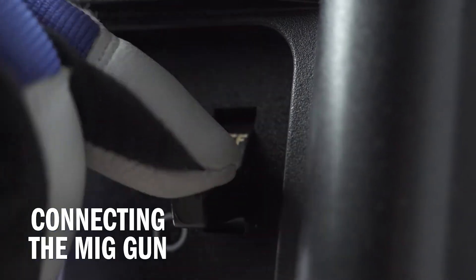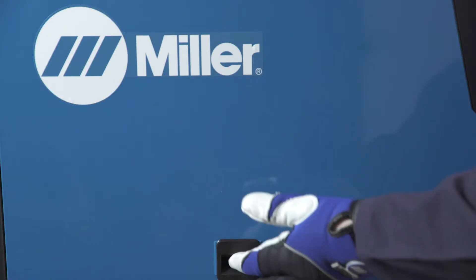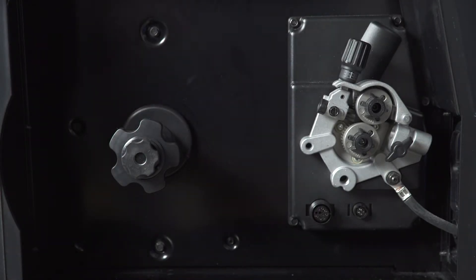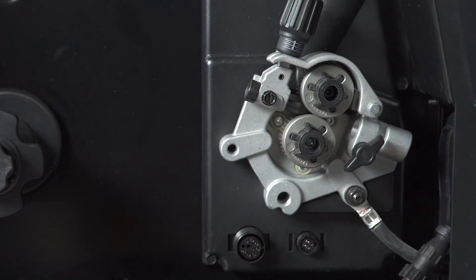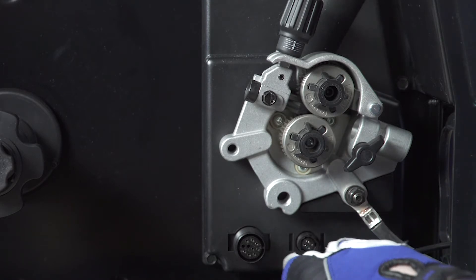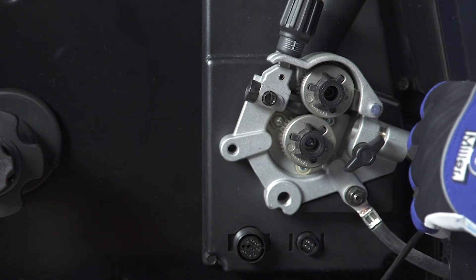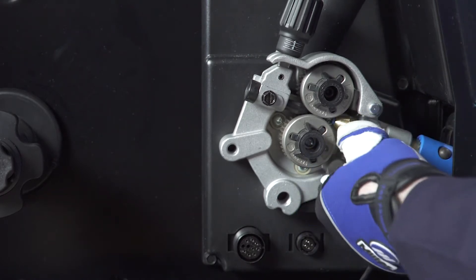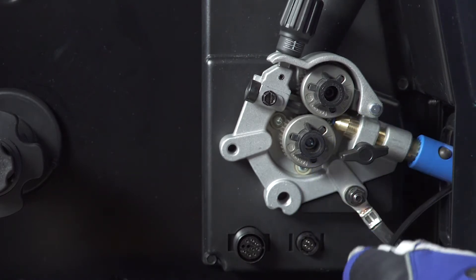First, make sure your machine is powered off. Open the side door. Route the control cable through the access hole in the front of the machine. Then, install the MIG gun into the drive casting, making sure it is completely seated in the drive assembly. Tighten the gun connection to the receptacle with a threaded side knob.